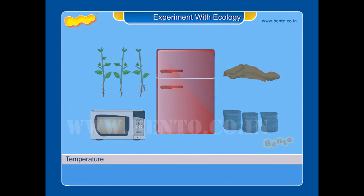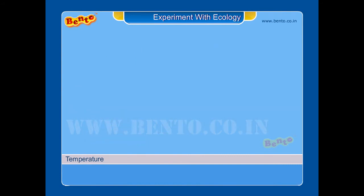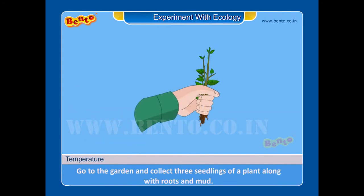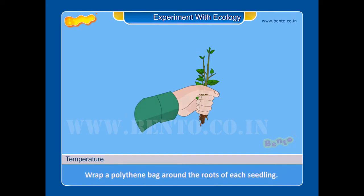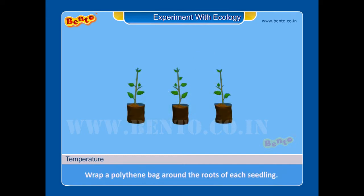Procedure. Step 1: Go to the garden and collect three seedlings of a plant along with roots and mud. Step 2: Wrap a polythene bag around the roots of each seedling.